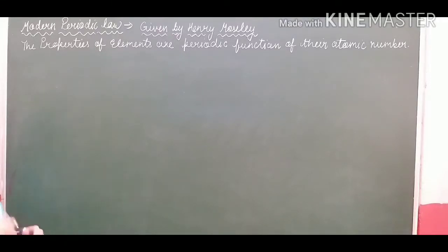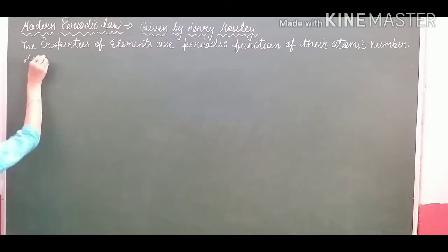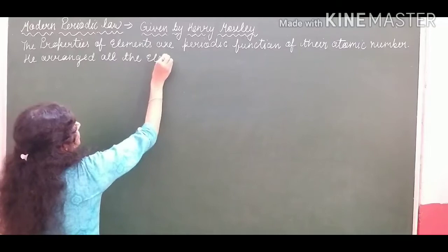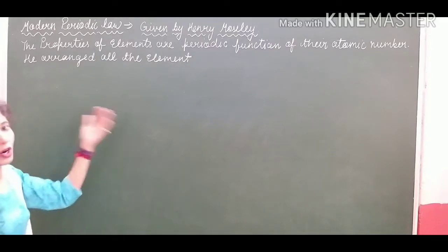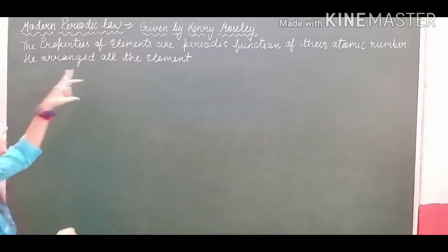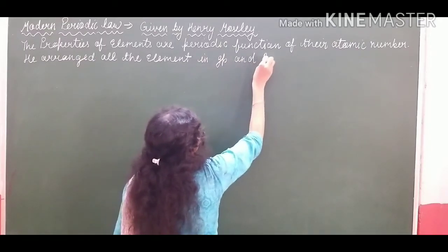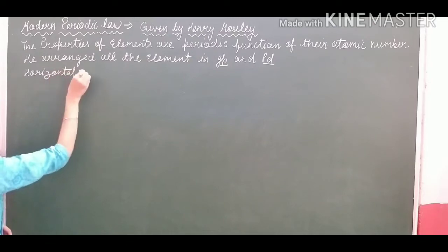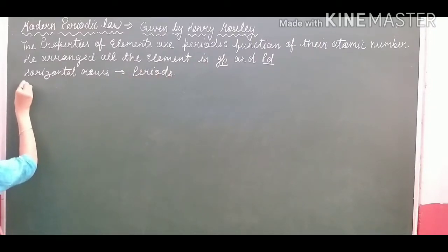Now, what Mendeleev did in his periodic table — slowly I will teach all the pattern. He arranged all the known elements at that time, because when he gave his law, a few elements were still not discovered. He arranged all the elements in groups and periods. Here PD represents the period and GP represents the group.